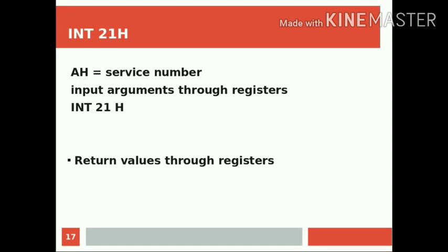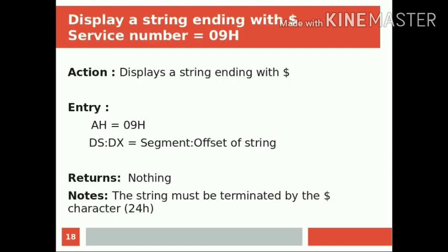One useful service provided by INT 21H is to display a string ending with a dollar sign. The service number is 09H. The action is to display a string that must be terminated by a dollar character. For entry, AH must be set to 09H as the service number, and DS:DX must be set to the segment and offset address of the string. This service returns nothing. If there is no dollar sign terminating the string, it will display characters until a dollar sign is reached in memory.